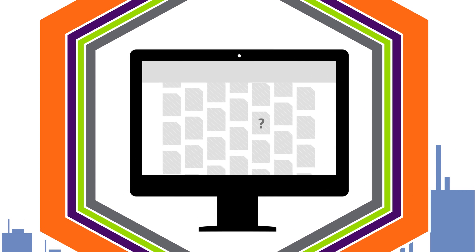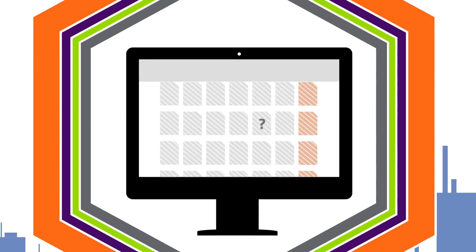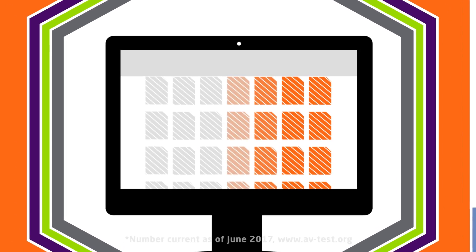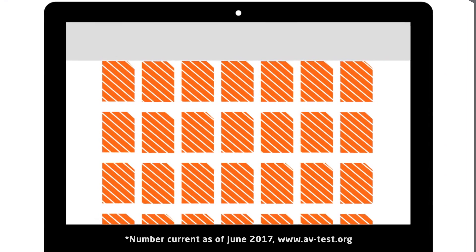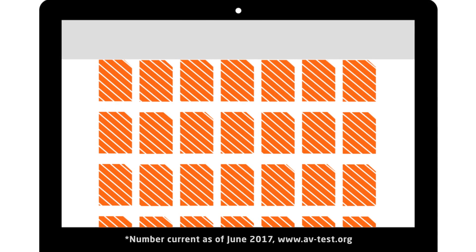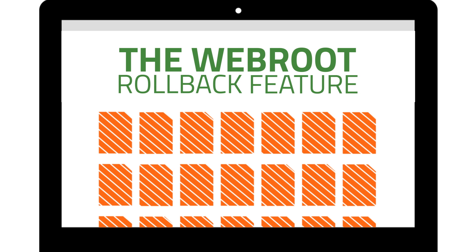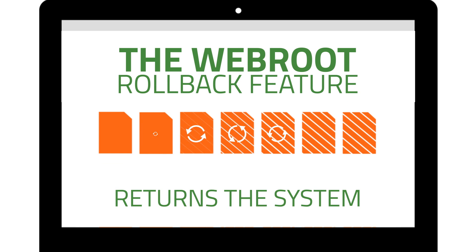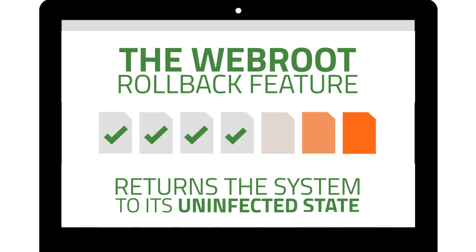If necessary, file execution is stopped. But should one of the 390,000 new threats introduced every day execute, the WebRoot journaling and rollback features are a final safeguard to return a system to its uninfected state.